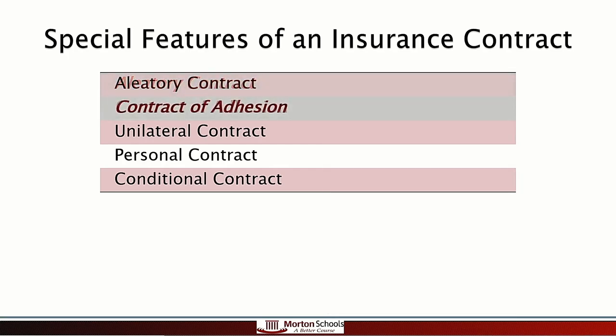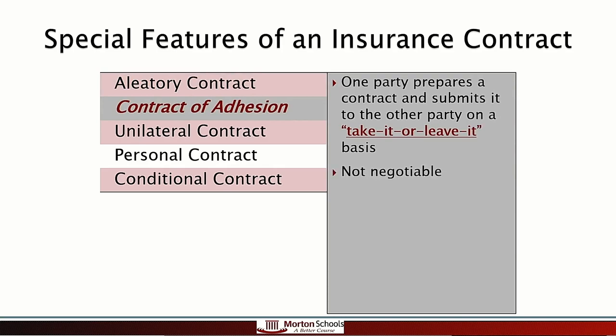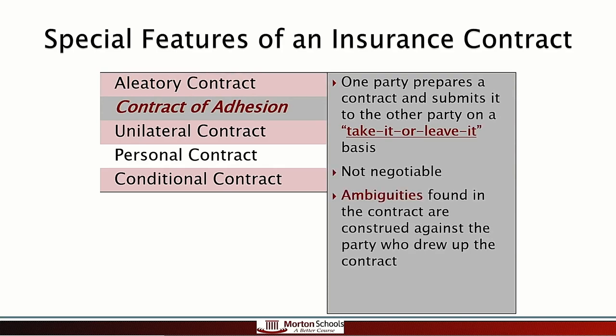Next we have a contract of adhesion. A contract of adhesion means take it or leave it — one party prepares the contract and the other party has to stick to it or adhere to it. In the real world, that means it's a pre-printed or boilerplate contract, which is honestly most of the contracts that we sign. When we sign a contract like that, we don't have any power to negotiate.